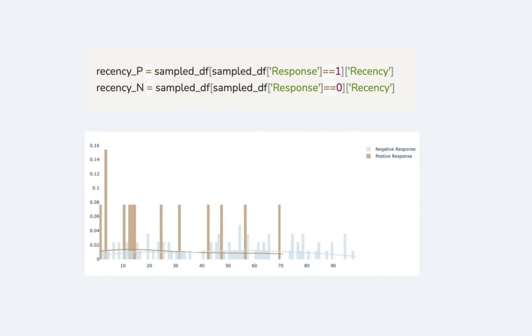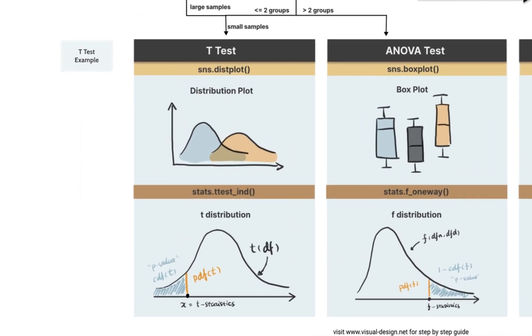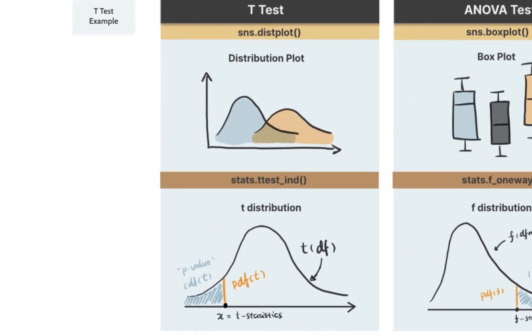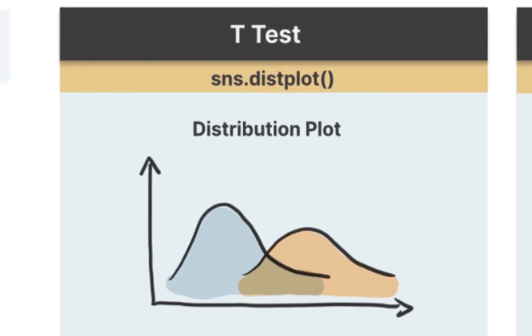Histogram or distplot in Python is a great visual representation of t-test. It appears visually that positive responses have lower recency compared to negative responses. To quantify the difference, let's follow the steps in hypothesis testing and carry out a t-test.